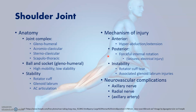The shoulder girdle is made up of several joints: the glenohumeral, acromioclavicular, sternoclavicular, and scapulothoracic joints. The combination of these joints gives the shoulder its very wide mobility as well as its strength. We're going to focus on the glenohumeral joint, which is a ball and socket joint. The glenoid itself is a fairly shallow socket, and therefore the shoulder has high mobility but at the expense of low stability.